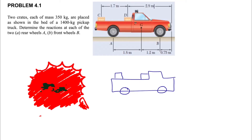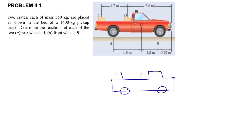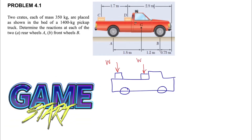Welcome back. In this question, we have two crates, each with a mass of 350 kilograms, placed in the bed of a 1400-kilogram pickup truck. We need to determine the reactions at each of the two wheels — in part A, we find the reactions at the rear wheels at point A, and in part B, we find the reactions at the front wheels.